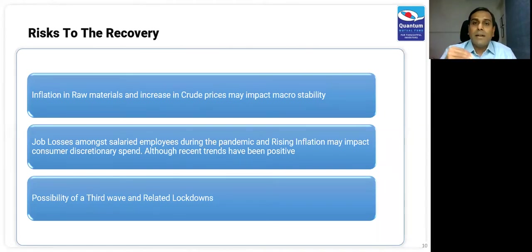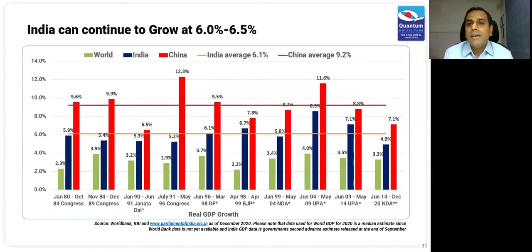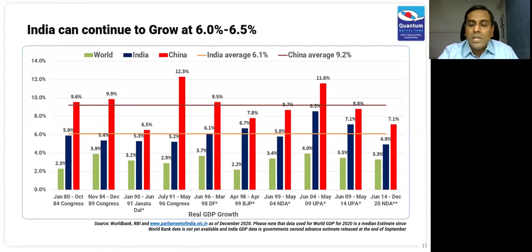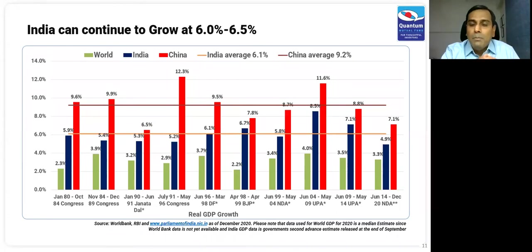Either this corporate CAPEX and macro activity trickles down and everyone's incomes go up, or the government continues to provide income, food, and MGNREGA support over time. Why do we talk about growth? This very long-term GDP chart of India and China, split across governments, shows that over the last 40 years it does not matter whether it is a stable government, single-party, coalition, BJP, or Congress government — India has grown at an average of about 6% real GDP growth.